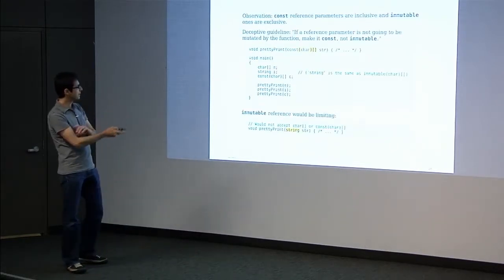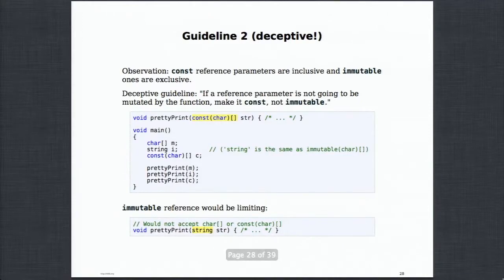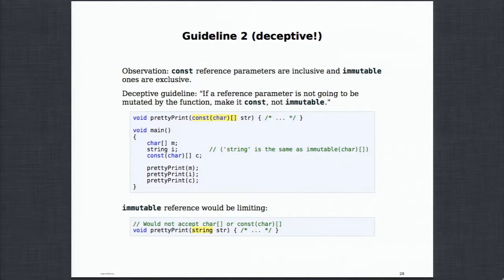Guideline 2: if a reference parameter is not going to be mutated by the function, make it const, not immutable. This looks like a good guideline — a pretty-print function taking const string can be called with mutable, immutable, and const strings. It works very well. And if you made it immutable, your users couldn't call your function with mutable or const.